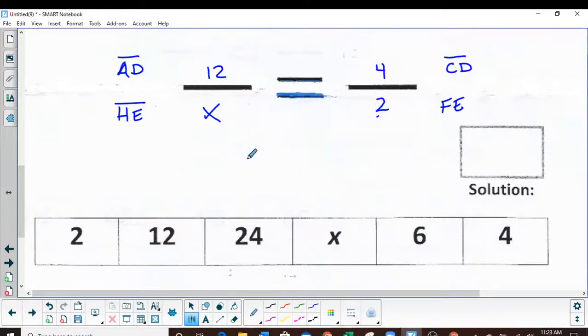Notice that everything matches what's down here in the boxes I pulled them out. So now all we got to do is cross multiply and I've got 4x equals 24, cross multiplying.